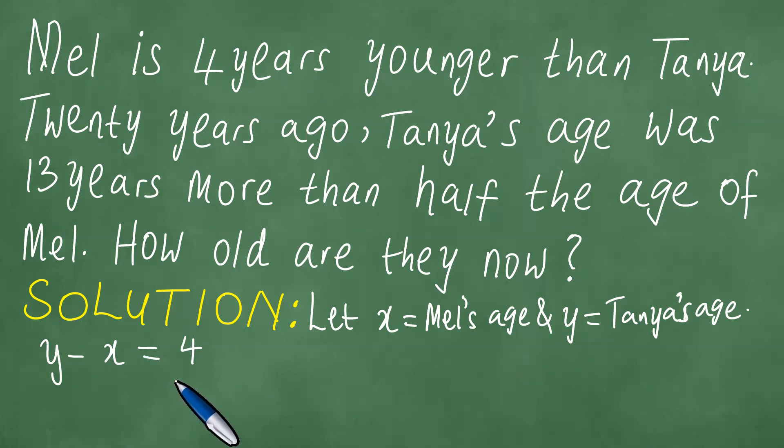Next, twenty years ago, Tanya's age was 13 years more than half the age of Mel. So we are comparing Tanya's age and Mel's age. We understand that 20 years ago, Tanya's age was Y - 20.